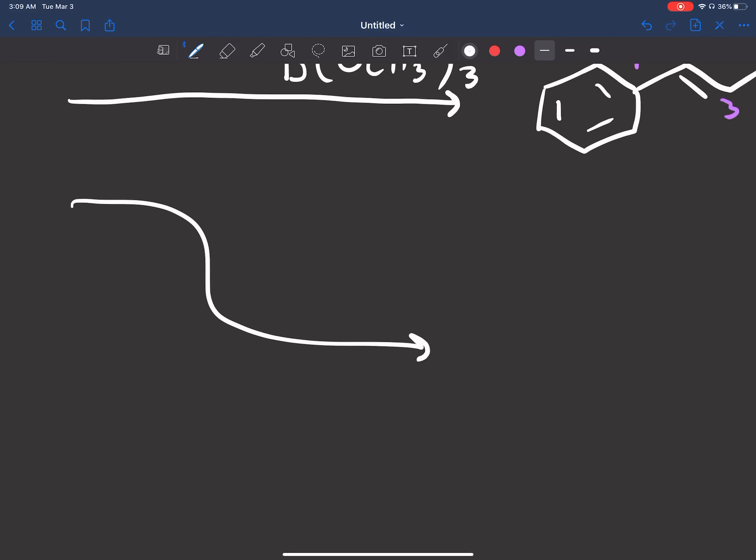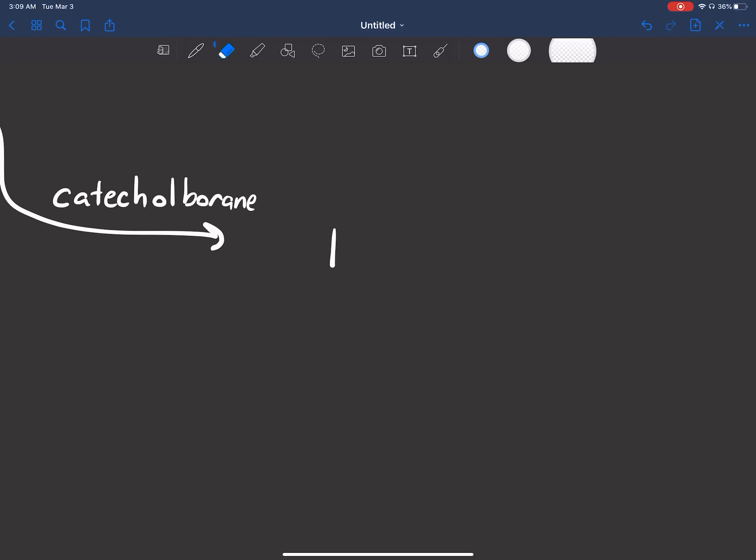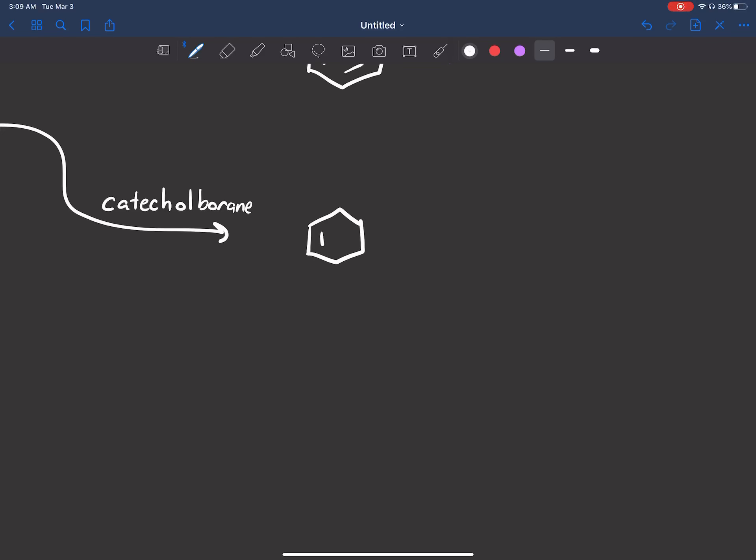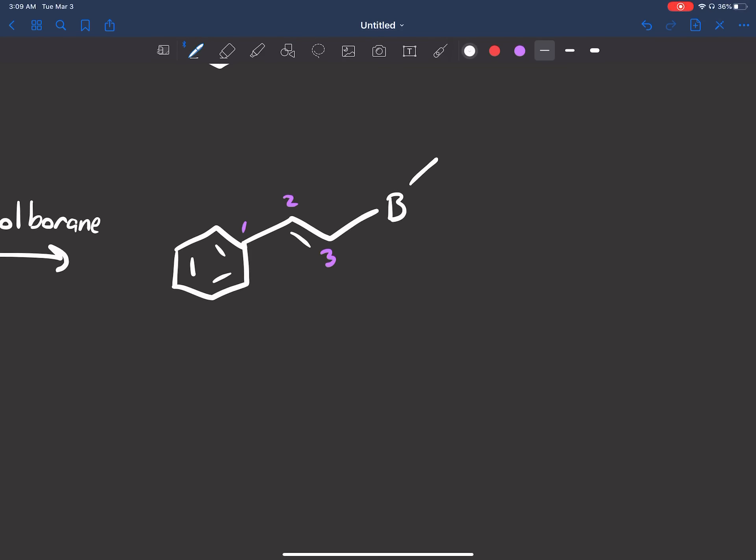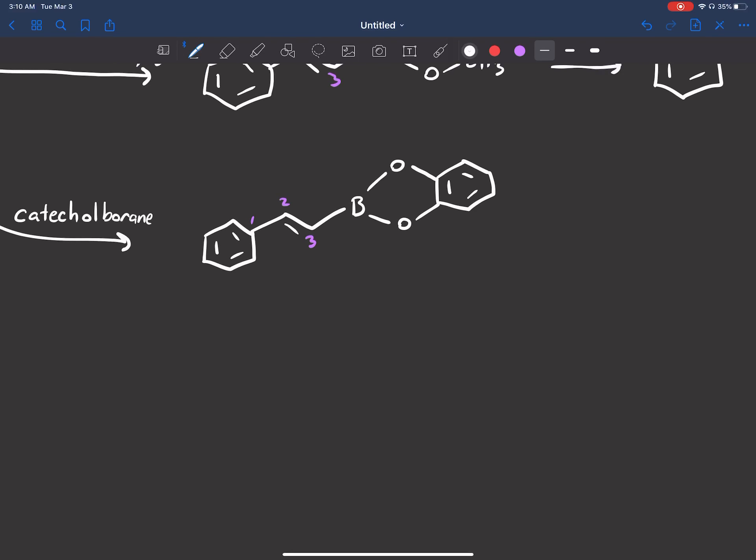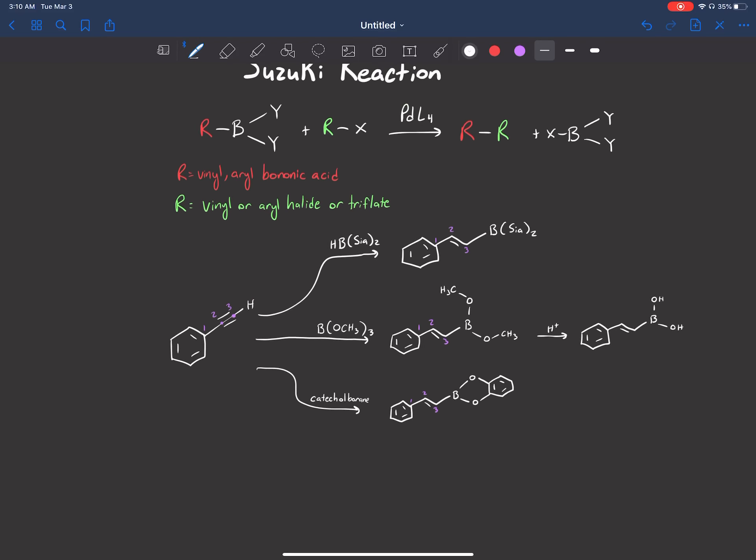That's the second pathway. The last pathway is catecholborane. So you just write this over the arrow, and we're going to get this compound. Let's just number the carbons again: one, two, three. So I'm going to have my boron and this weird looking ring with a benzene. And we can use that in our Suzuki reaction.